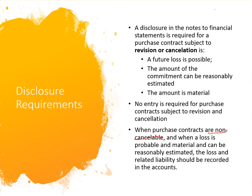When purchase contracts are non-cancelable, and when the loss is probable, material, and can be reasonably estimated, the loss and related liability should be recorded in the accounts. We need to make adjustments every time the price changes. These changes will be journalized at December 31, every end of the calendar or fiscal year, when we make adjusting entries. And at the time the contract is executed, meaning there is an exchange between the buyer and the seller, we recognize the change in price.